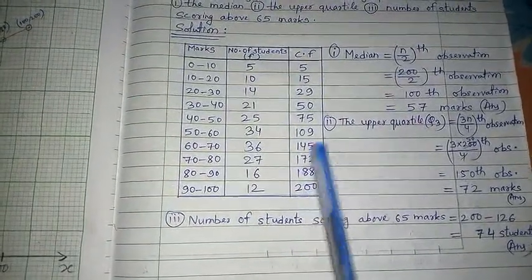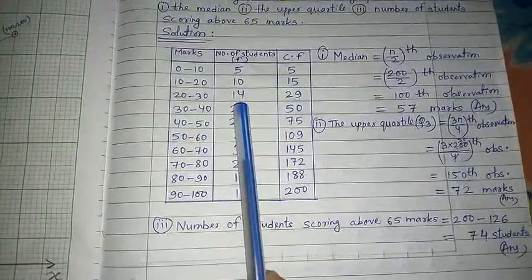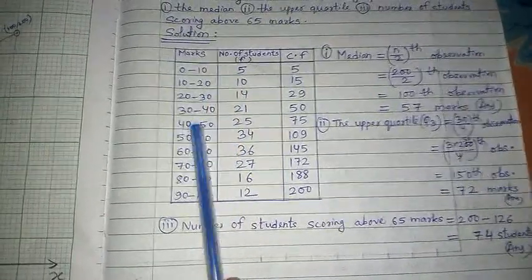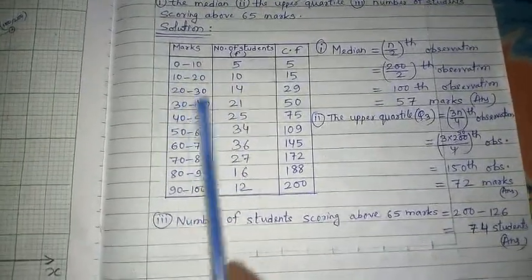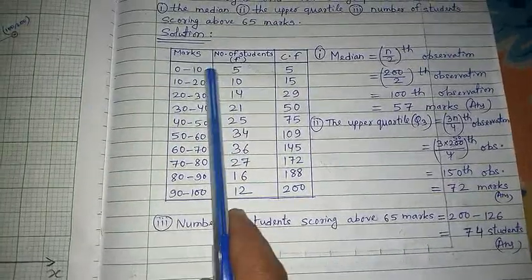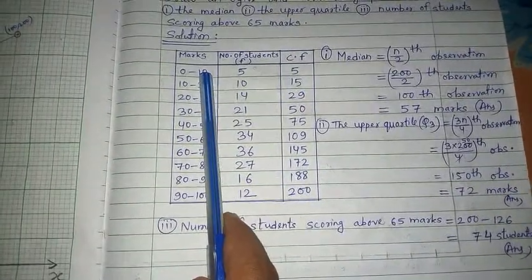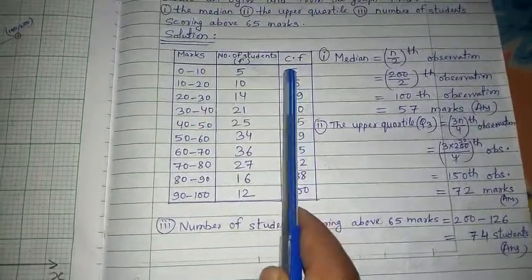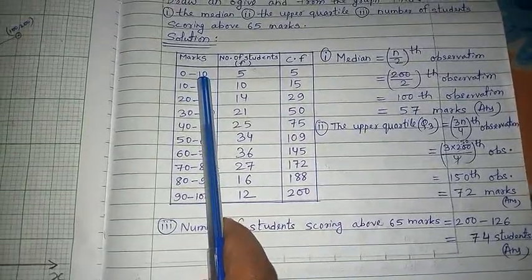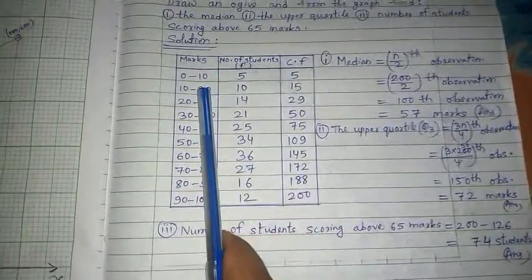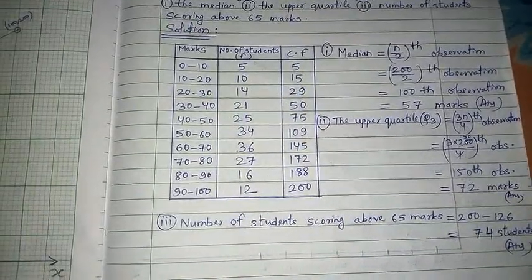We will draw the ogive with the help of this frequency distribution table. We have to take the second one from the marks and we have to take CF. If you take 10 here, then we will take 5, for 20 then 15, for 30 then 29.